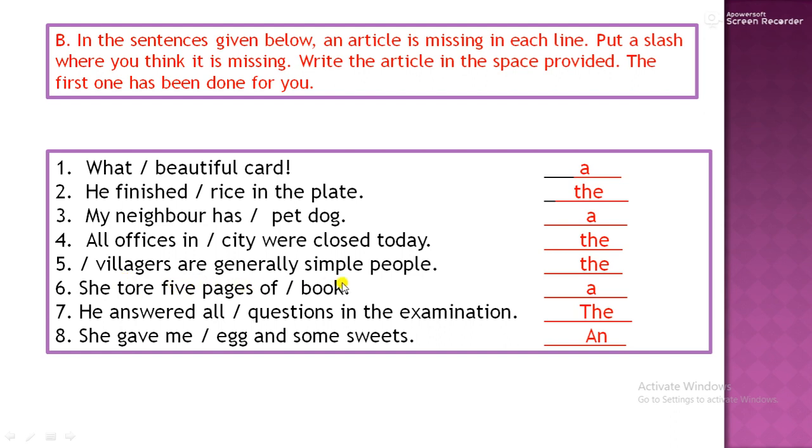Villagers are generally simple people. Here, again hint is towards village people. So the villagers are generally simple people. So in the beginning, you will put a slash. Here the word is missing. And missing word we will write in the space provided. She tore five pages of book. So what is missing? Here the word is missing, article is missing. So of a book. He answered all questions in the examination. He answered all the questions. Some questions are already there. So all the questions means which were there in the exam.